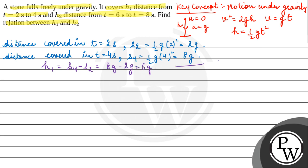So this is equation 1. Now, distance covered in 6 seconds, let's say s6, will be equal to half g times 6 squared, so this is equal to 18g.